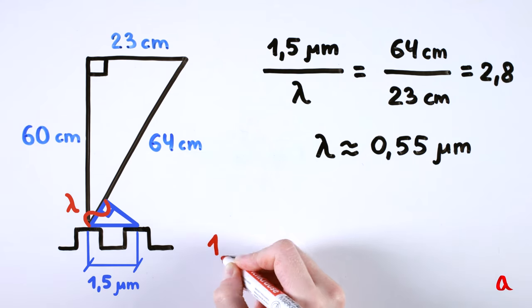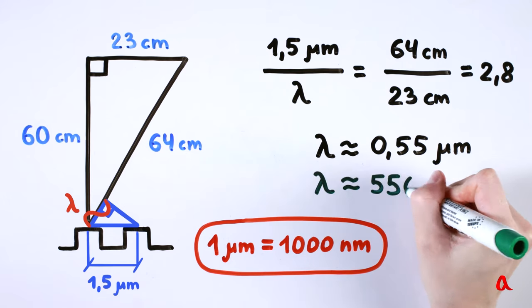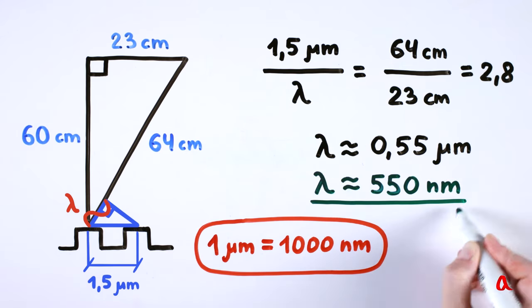But it is more convenient to measure such distances in nanometers. We have experimentally established that the wavelength of the green laser is approximately 550 nm.